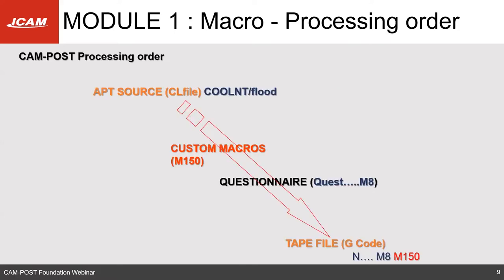Here is an overview of the macro processing order. It always starts from the APT source or CL file. Every block or command goes through this logic until it reaches the tape file. You have the custom macros section where you can have many different macros. If the code has standard behavior, it goes through the questionnaire, does its processing, and then outputs to the tape file.